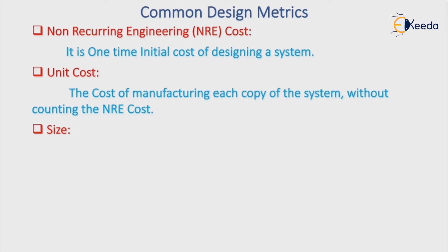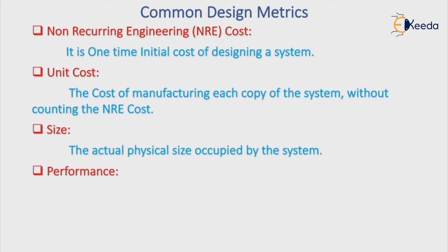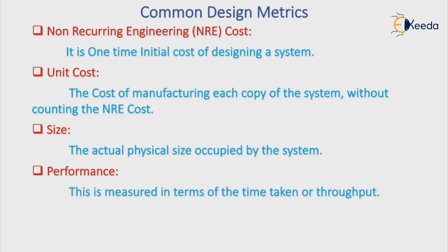The next parameter is size. The actual physical size occupied by the system is nothing but the size design metric of a system. Then next is performance, which is measured in terms of time taken, or it is nothing but throughput. The performance must be high, the size must be low, and the unit cost and NRE cost must be as low as possible.